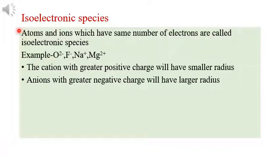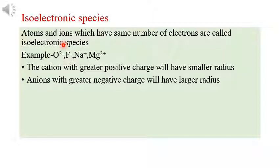Next, what is meant by isoelectronic species? As the name suggests, the number of electrons present is the same. Atoms and ions that have the same number of electrons are called isoelectronic species. Examples are O²⁻ (oxygen has 8 electrons; gaining 2 gives O²⁻), F has 9 electrons and F⁻ has 10 electrons, Na has 11 electrons and Na⁺ has 10 electrons.